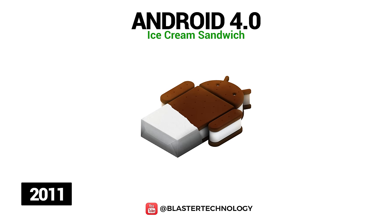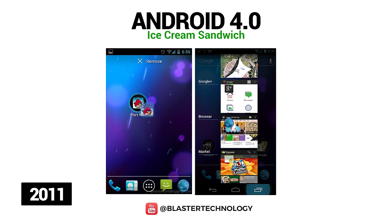The next version of Android, Android Ice Cream Sandwich, was released in 2011 and combines many of the features of Honeycomb. This version introduced support for unlocking the phone with the camera, the ability to monitor mobile data and Wi-Fi usage, and sliding gestures to dismiss notifications or browser tabs.